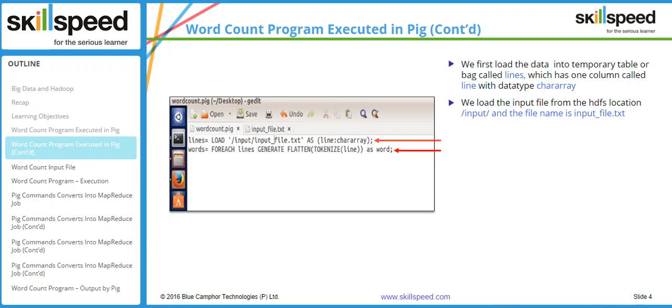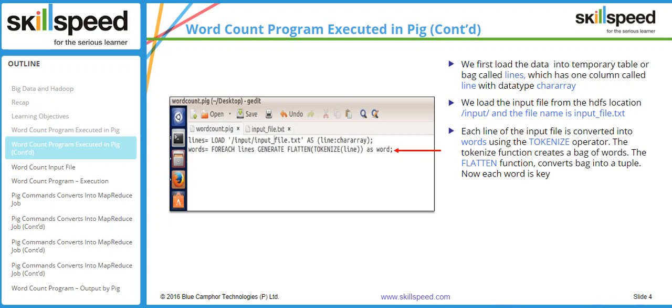In the second line I am creating another relation called 'words'. Each line of the input file is converted into words using the TOKENIZE operator. The TOKENIZE function creates a bag of words, and the FLATTEN function converts a bag into a tuple. Using the FOREACH operator I am referring to the previous relation, tokenizing each line, and extracting every word which comes as a bag. I then convert that into a tuple using the FLATTEN keyword and save it as a relation in 'words'.